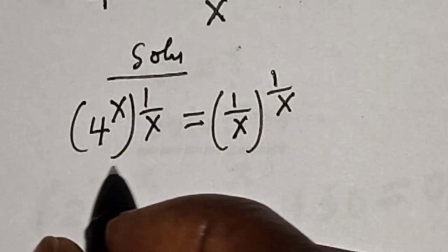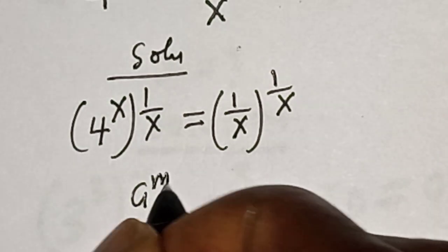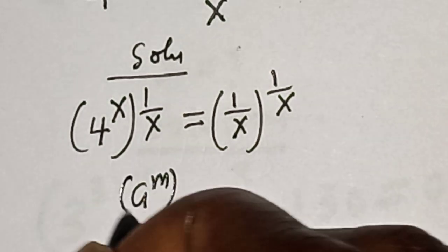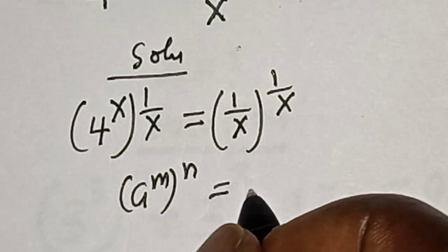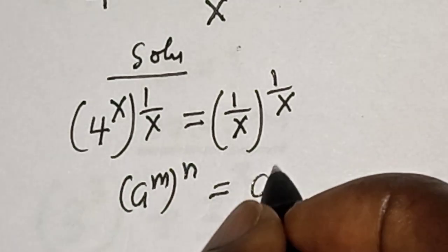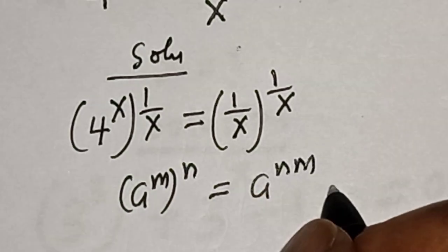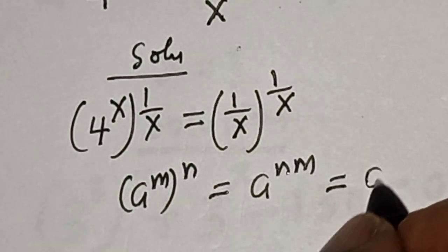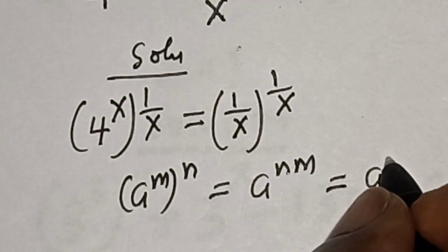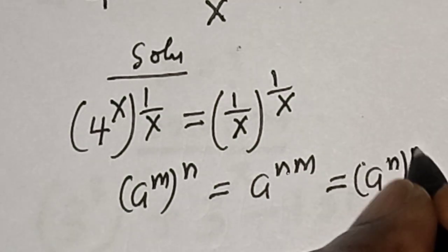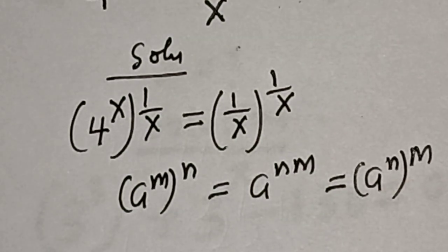Take note of this rule: a raised to power m, raised to power n, is equal to a raised to power n times m, which is equal to a raised to power n to the power of m.